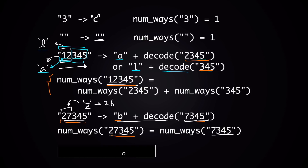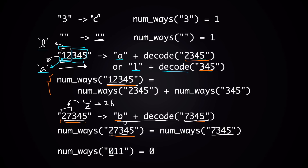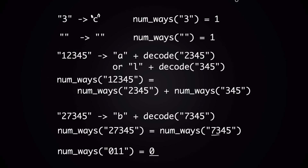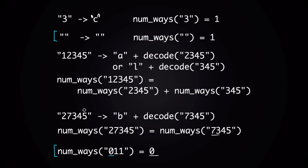What if the string starts with 0? There's no message that would encode into '011', because no single letter maps to 0 or to '01', so num_ways('011') should return 0. Using all of these observations, let's write our function recursively. There are two base cases: when the string is empty, and when the string starts with 0. For the recursive case there are two sub-cases: when we call our function recursively twice, and when we call it only once.